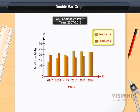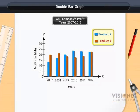On the X axis we take years and on the Y axis we take profit in lakhs. By different colors of bars we represent product X and product Y. The blue color bars represent product X and the green color bars represent product Y.